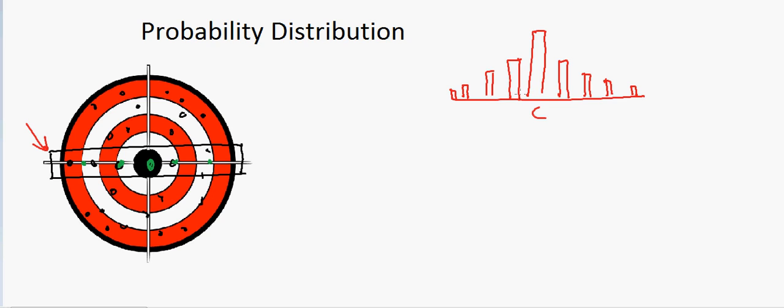So this is what we call Gaussian distribution. And most of the things which happen in the world are always meant to be on the target. But there are always chances to miss on the upside or downside. And that's why we always have a lot of use of Gaussian distribution. And we call this as a standard error.